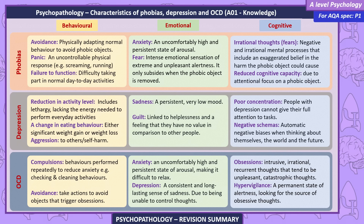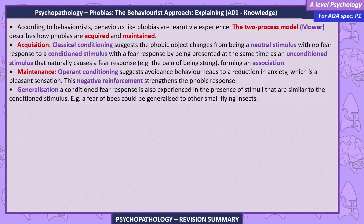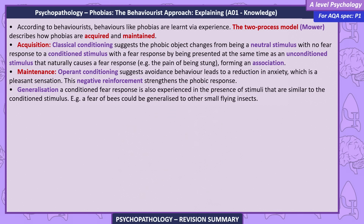The behavioral approach to explaining and treating phobias. According to behaviorists, behaviors like phobias are learned via experience. The two-process model describes how phobias are acquired and maintained. Acquisition: classical conditioning suggests a phobic object changes from a neutral stimulus with no fear response to a conditioned stimulus with a fear response, by being paired with an unconditioned stimulus that naturally causes fear, such as the pain of being stung. Maintenance: operant conditioning suggests avoidance behavior leads to a reduction in anxiety, which is pleasant — this negative reinforcement strengthens the phobic response. Generalization: a conditioned fear response is also experienced in the presence of similar stimuli; for example, a fear of bees could be generalized to other small flying insects.